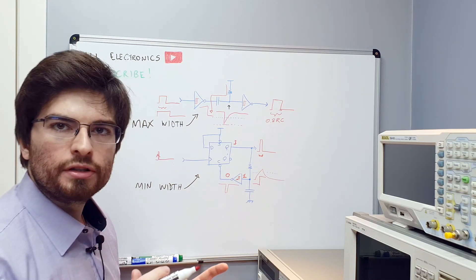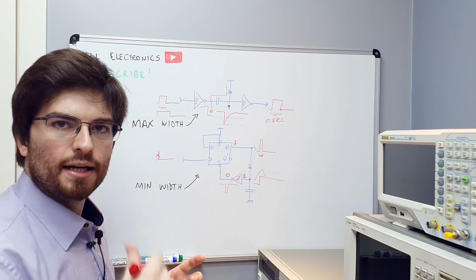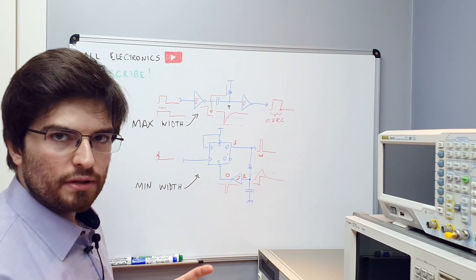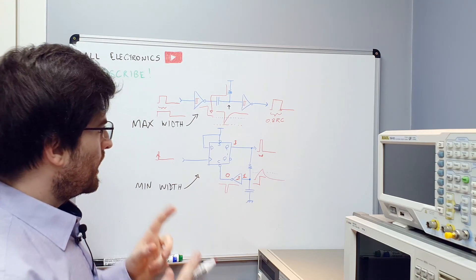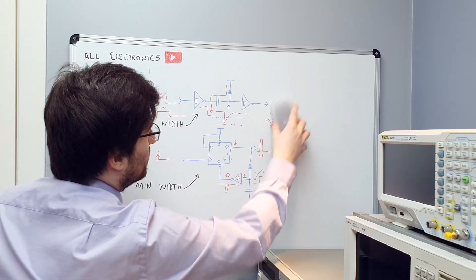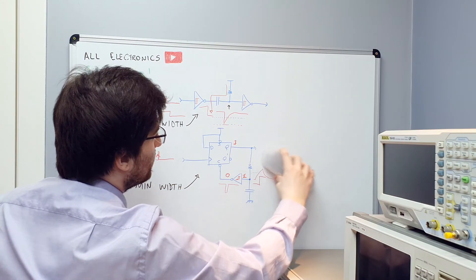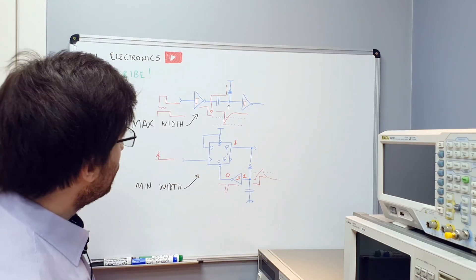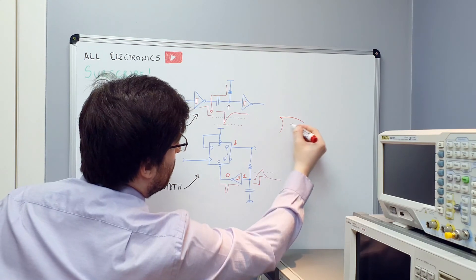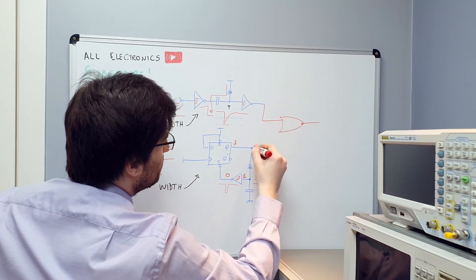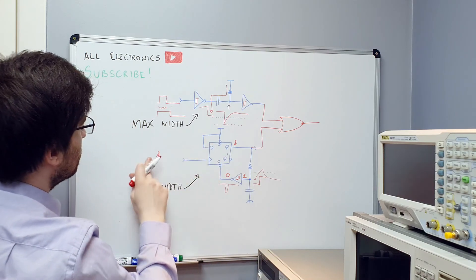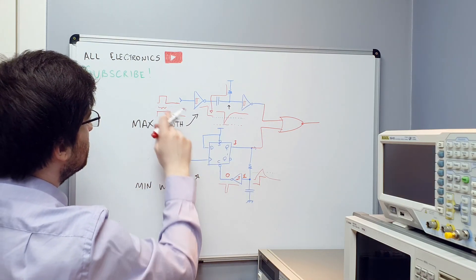Now we can combine the two circuits to generate an output pulse that is limited to a maximum and a minimum value. This can be done by using an OR gate on the output, connected to the two circuits, with the inputs connected together.